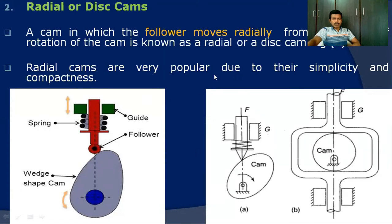The next type of cam based on its shape is the cylindrical cam. The cam profile is cylindrical in shape. The circumferential surface of the cylinder is cut into a groove, and the follower edge is fixed in this contour. When the cylinder rotates, the follower takes corresponding motion.